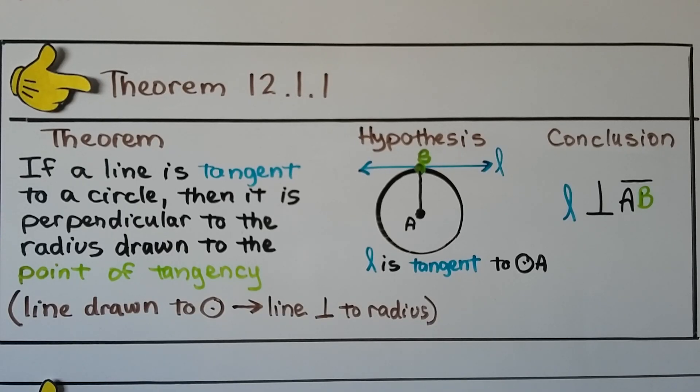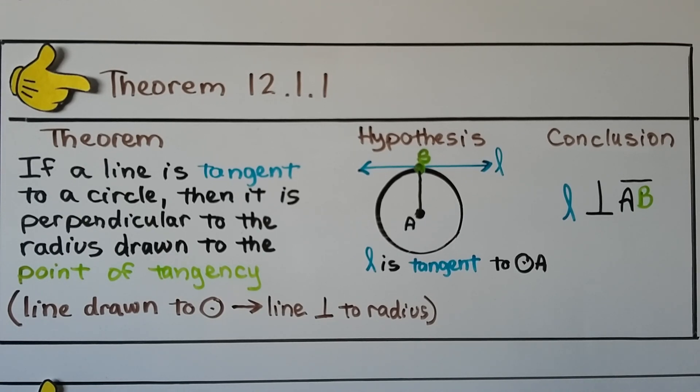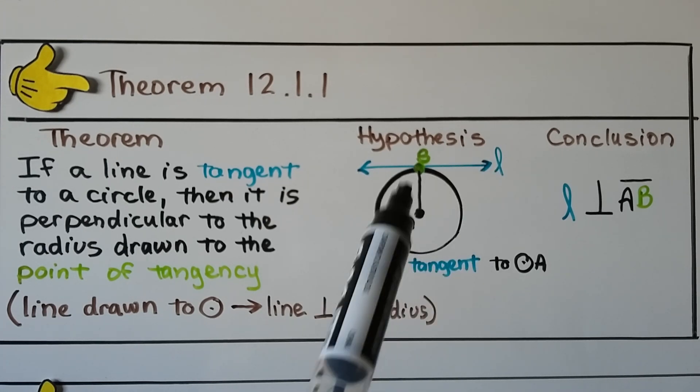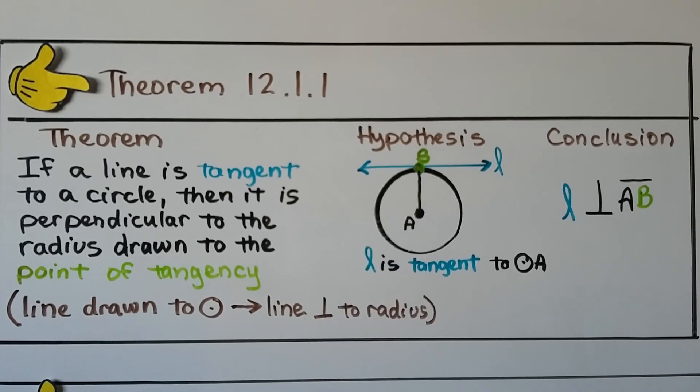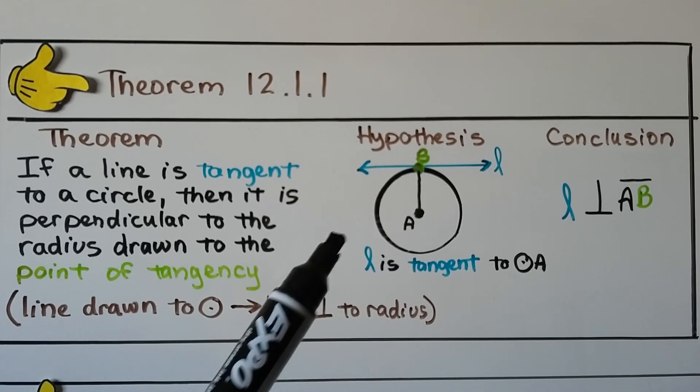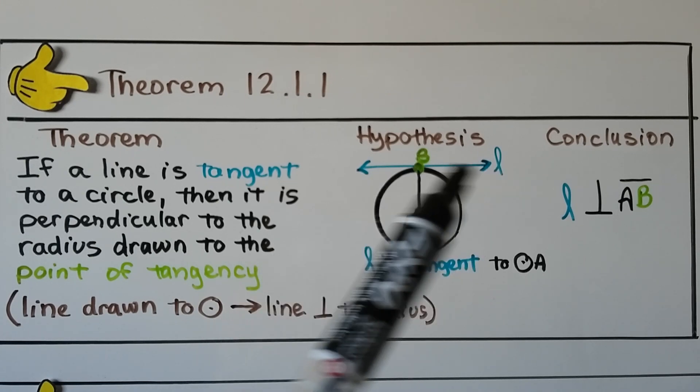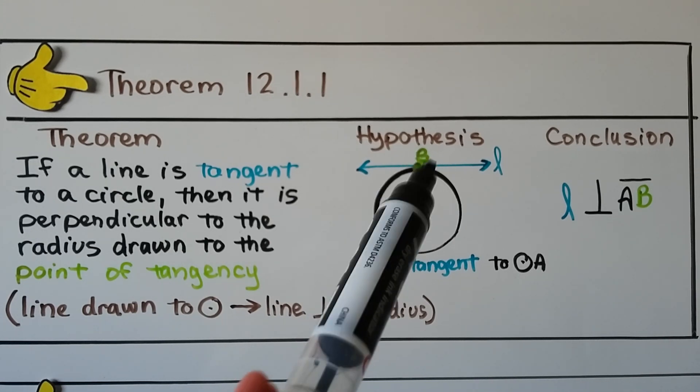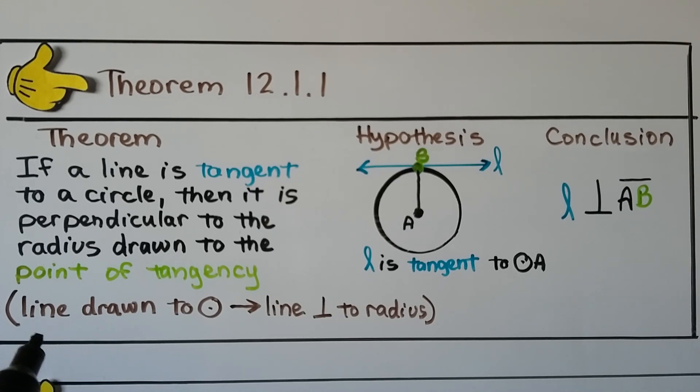For your notes, we have our first theorem. It says, if a line is tangent to a circle, then it's perpendicular to the radius drawn at the point of tangency. Line L is tangent to circle A. Our conclusion is line L is perpendicular to segment AB. We can write it in a proof notation as line drawn to circle, therefore line perpendicular to radius.